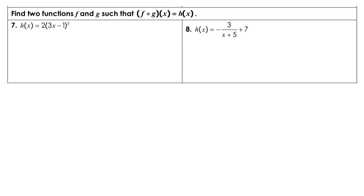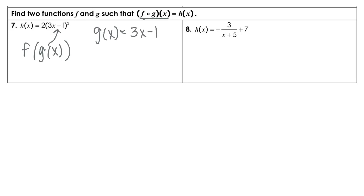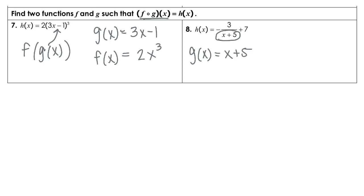For number 7, we needed to decompose the function. Noticing the pattern, h of x is the same thing as f of g of x. g of x is going to be the inside part, so g of x is 3x minus 1, and then f of x is the outer part, so that's going to be 2x cubed. By the same idea for number 8, this inside portion is going to be your g of x — that's x plus 5 — and then f of x, the outer part, is going to be negative 3 over x, and then plus 7.